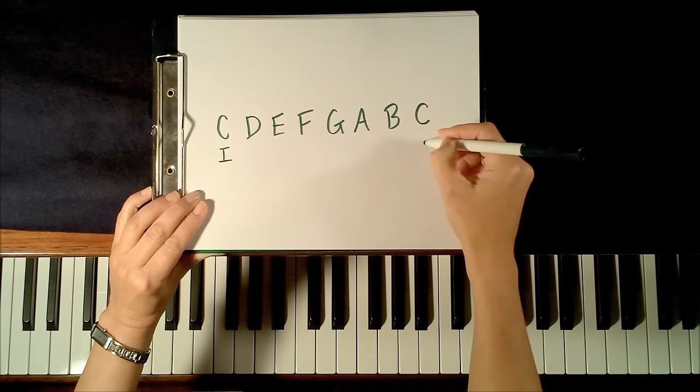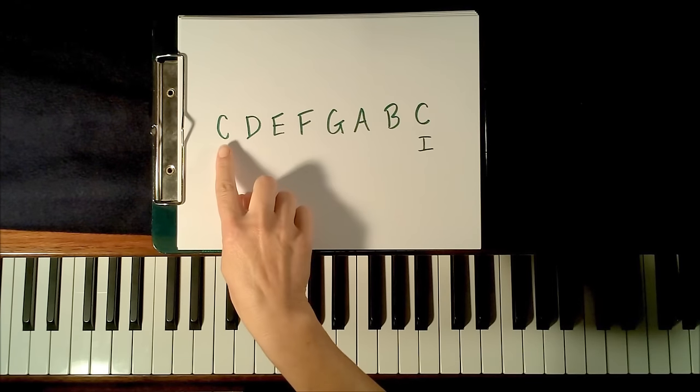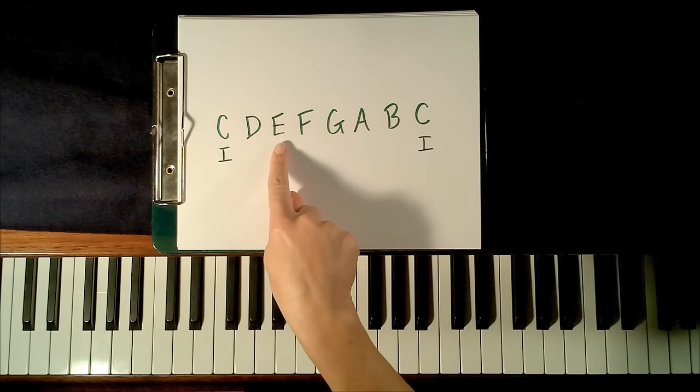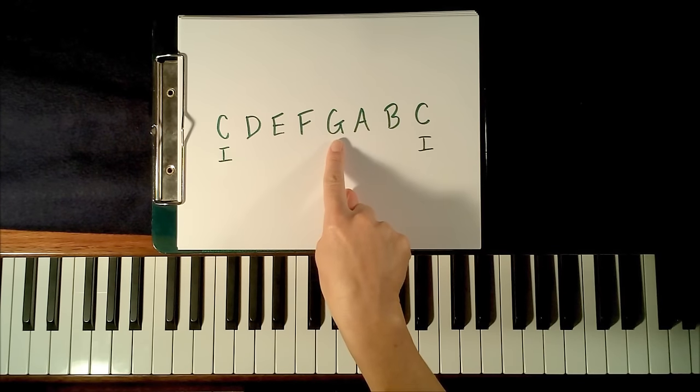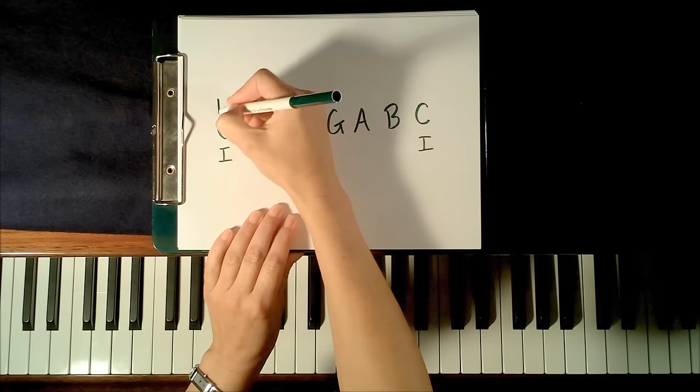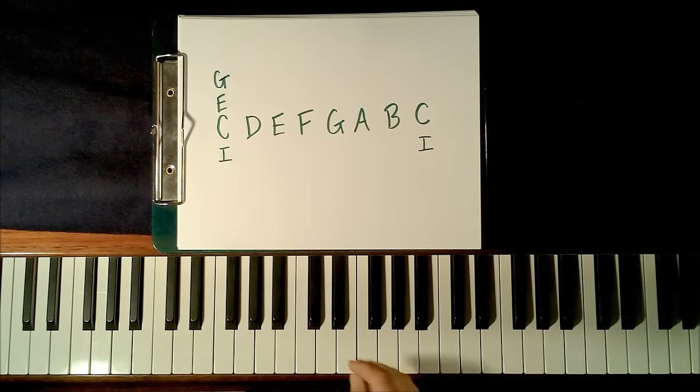And I'm going to use the Roman numeral I to represent the first note of the C scale. To form a chord on C, what I'm going to do is use the note C, skip to E, and then skip to G. So I'm not going to play the notes D or F. So a C chord, a C major chord, is the notes C, E, and G.